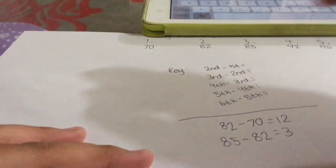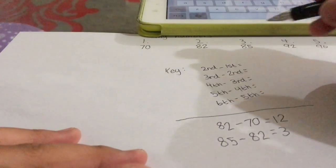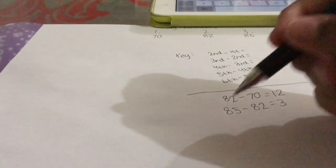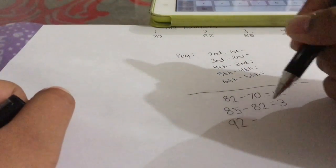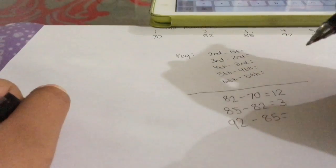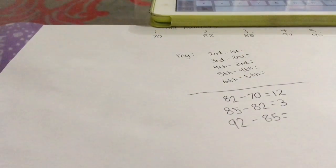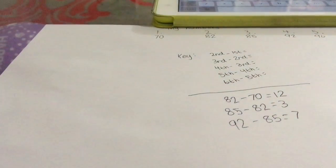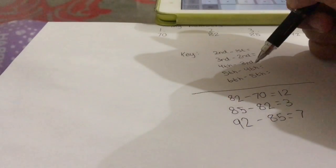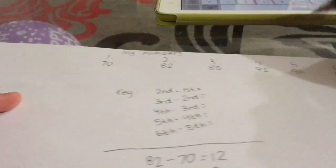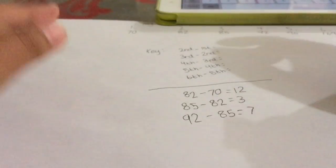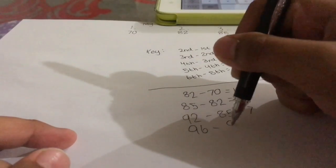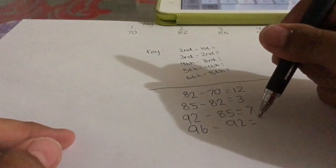Then it's the fourth number minus the third number. In my case, that would be 92 minus 85. And then the fifth number minus the fourth number. In my case, that would be 96 minus 92. That's four.